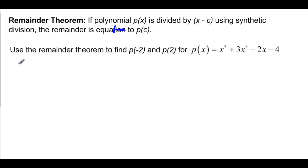So P of negative 2, we know that C is negative 2. That's on the outside. And then we're going to put in our 1 for X to the 4th and 3 for X cubed, 0 because there's no X squared term, negative 2 for X, and then negative 4. Whatever my remainder is here would be the same thing as if I were to plug in this negative 2. So let's do the synthetic division.